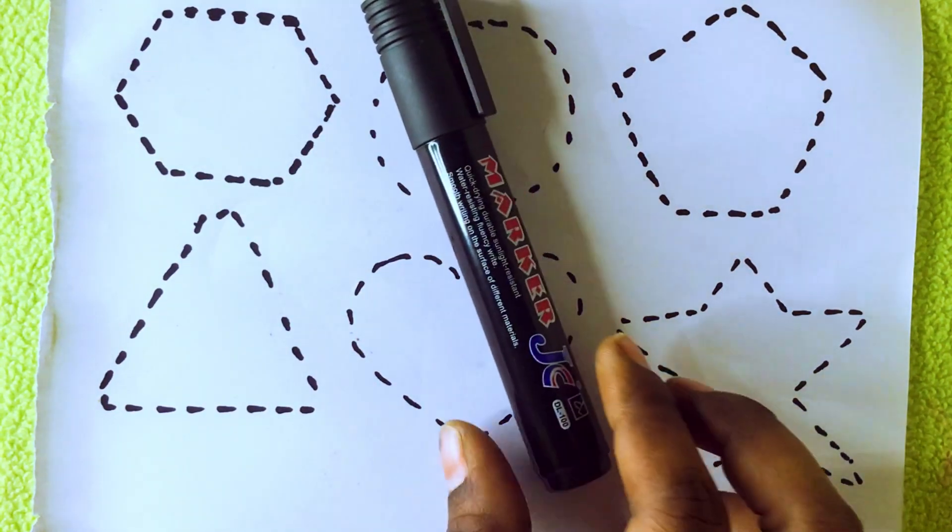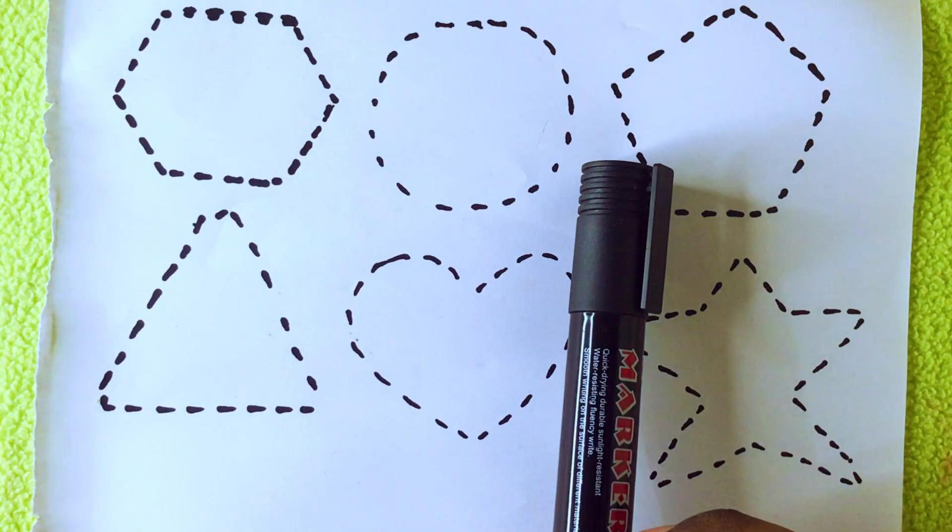And this is the block marker. We are going to redraw the shapes. Let's go.